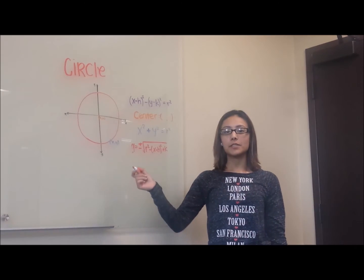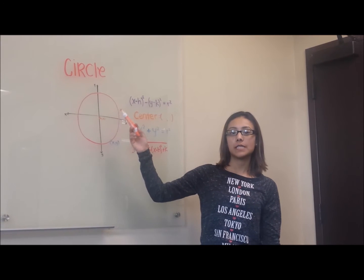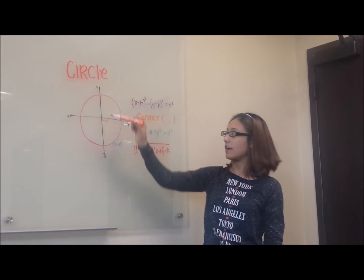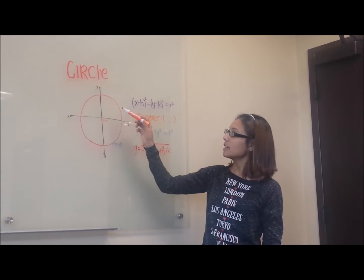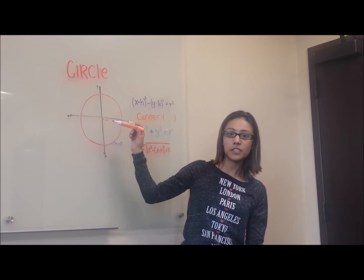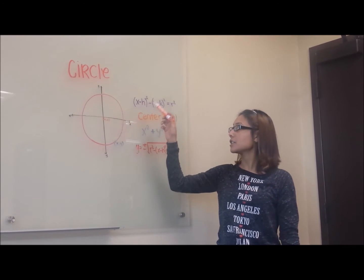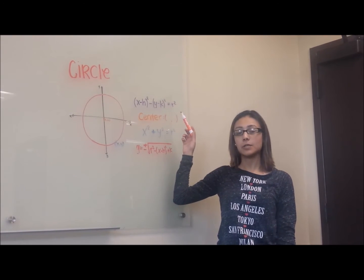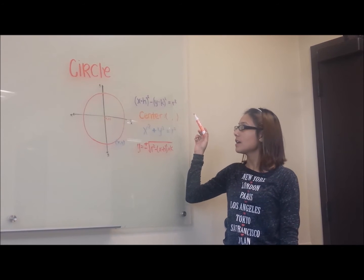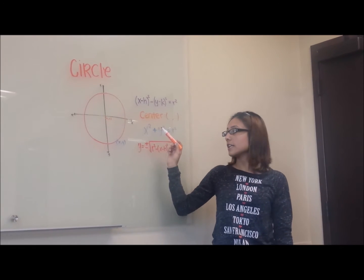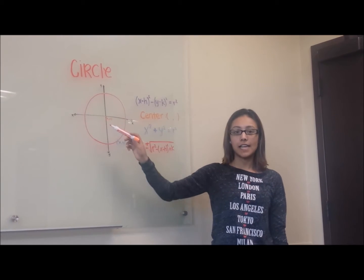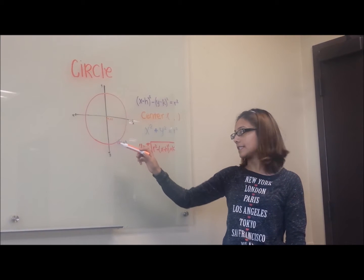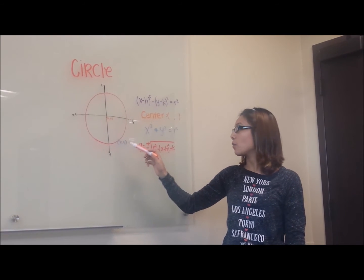First we're going to talk about the circle. The circle is the simplest conic section. This is how a circle looks on a graph. The equation of the circle is x minus h squared plus y minus k squared equals r squared. The center is classified as h, k, and any point on the circle is classified as x, y.